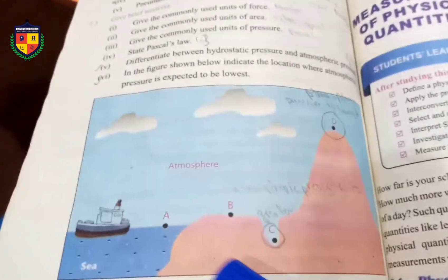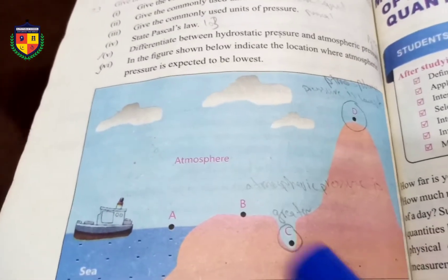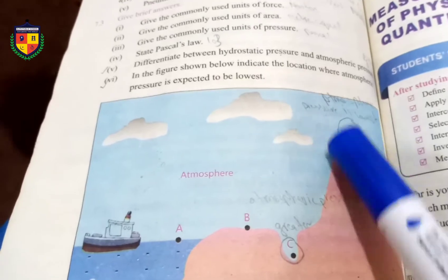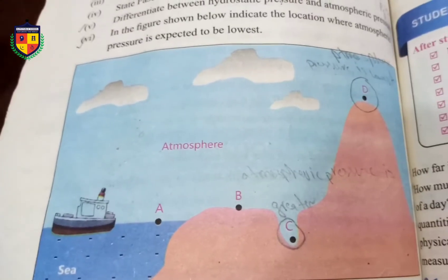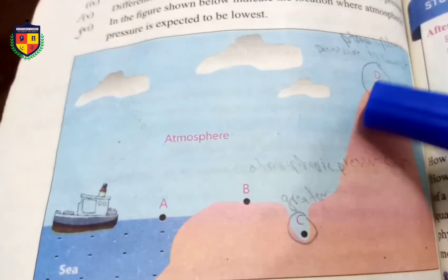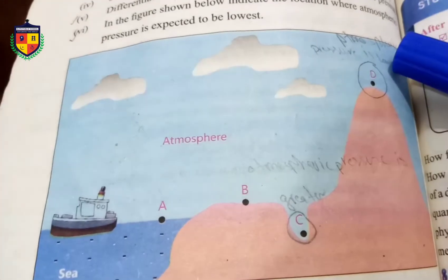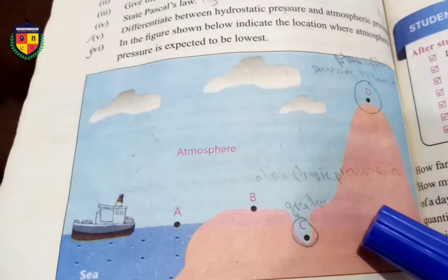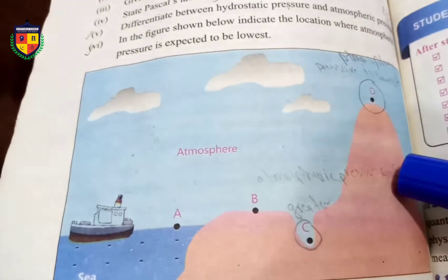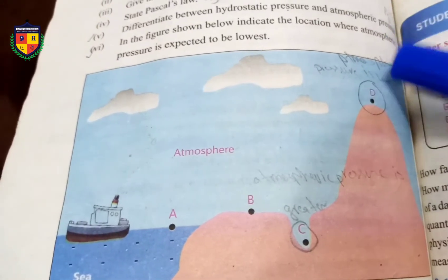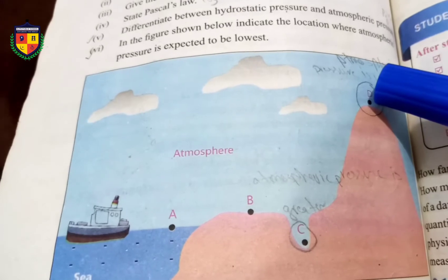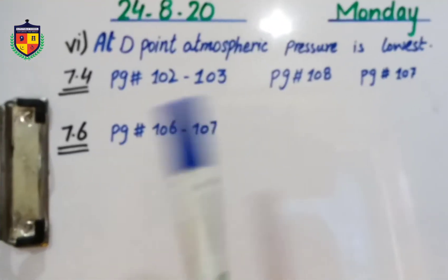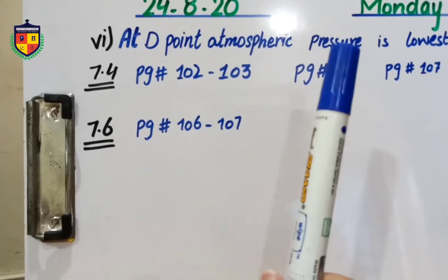In this figure, indicate the location where atmospheric pressure is expected to be lowest. The options are A, B, C, and D. The answer will be D — this is where the atmospheric pressure is lowest.